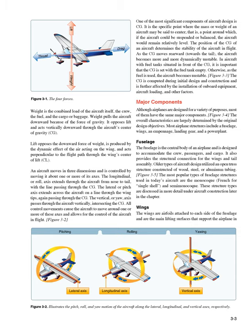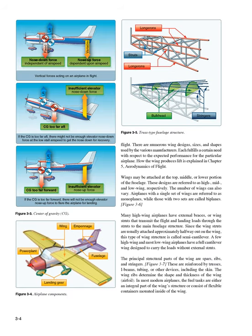Wings. The wings are airfoils attached to each side of the fuselage and are the main lifting surfaces that support the airplane in flight. There are numerous wing designs, sizes, and shapes used by the various manufacturers, each fulfilling a certain need with respect to the expected performance for the particular airplane. Wings may be attached at the top, middle, or lower portion of the fuselage. These designs are referred to as high, mid, and low wing, respectively.